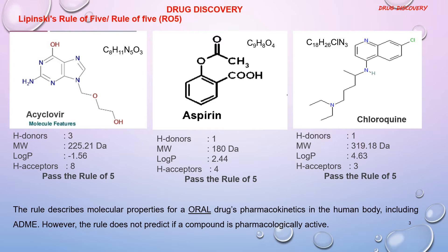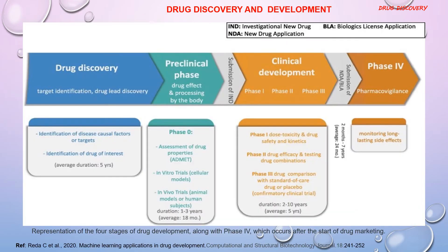Now, check with the anti-malarial drug chloroquine. The Lipinski rule is used in drug discovery to check whether the lead molecule can be used as a bioavailable oral drug. Drug discovery and development can be divided into four stages. The first phase is the drug discovery phase, which includes target identification and drug lead discovery.